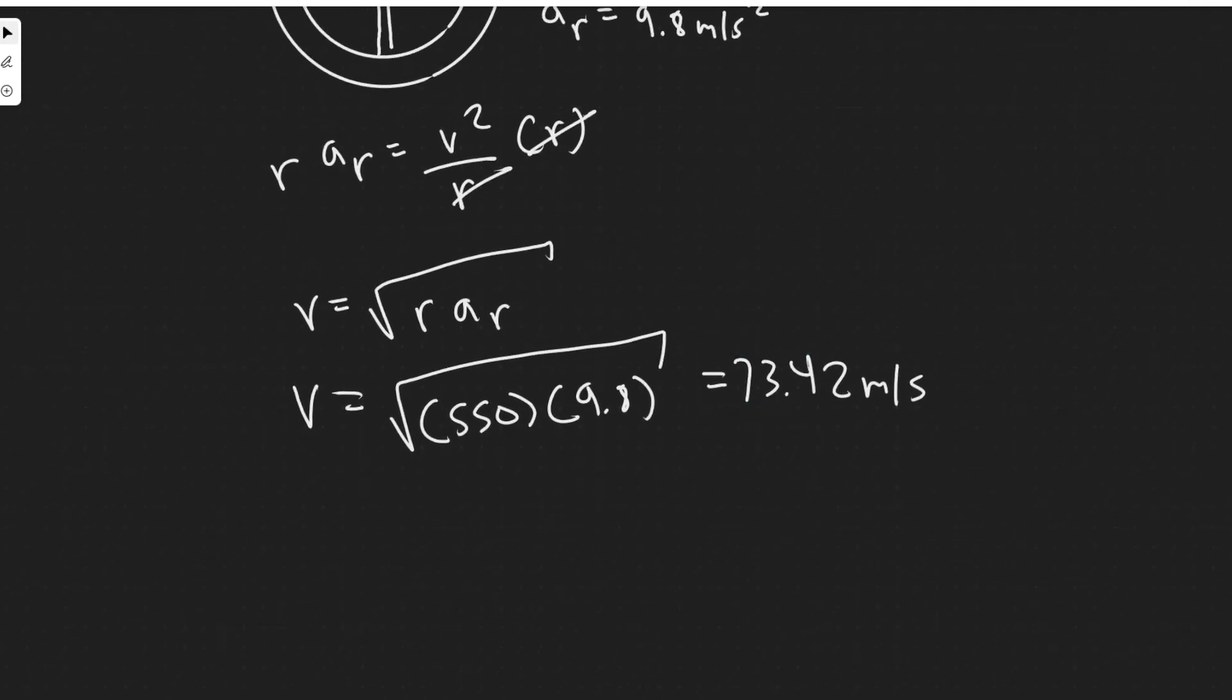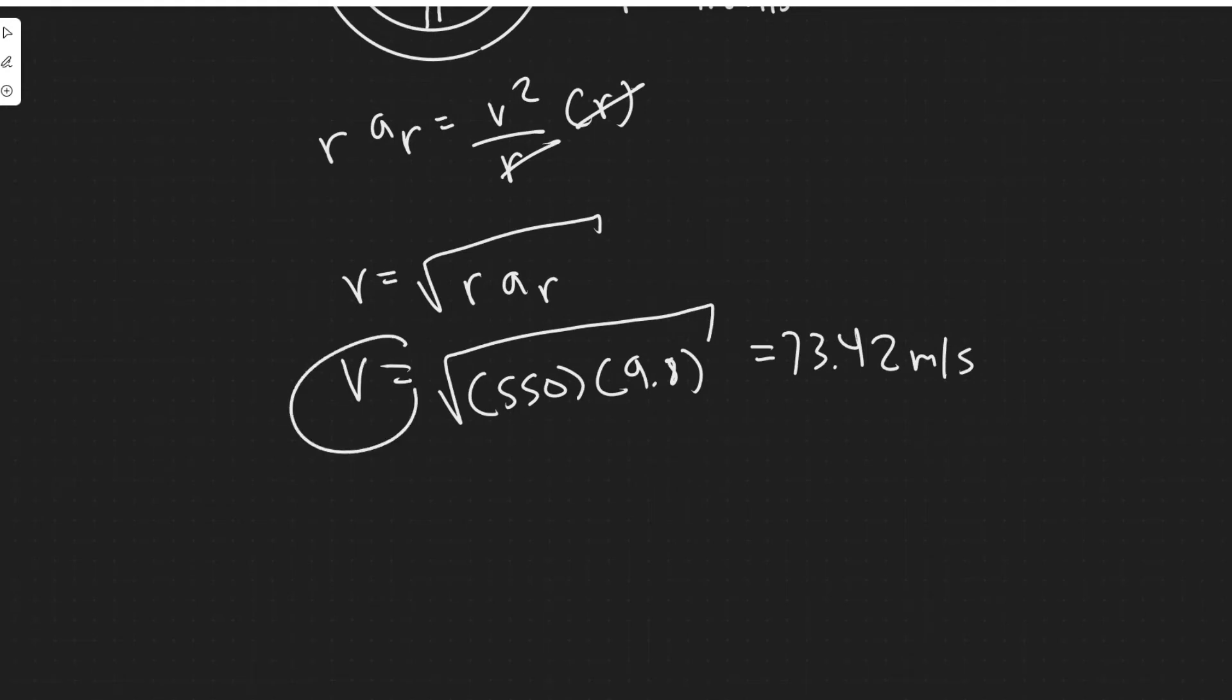And then, now that we have velocity, as I said, we're going to solve for omega. So velocity equals omega times r. So we would divide by r. So omega is equal to our velocity, which we just solved for. I'm going to use my exact value when I calculate this. So I'll just write 73.42. And then we're dividing by the radius again, which was 550.